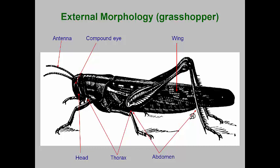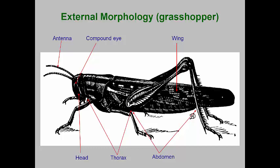The grasshopper has been used for decades as the typical insect for morphological studies, so we'll use the grasshopper too. In this illustration we can see the three tagmata — the head, thorax, and abdomen — as well as some of the major appendages or structures. We can see the antennae, compound eyes, three pairs of legs, and the wings.